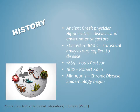In 1865, French chemist and microbiologist Louis Pasteur showed that a specific organism was causing an epidemic in silkworms. Then in 1882, Robert Koch, a German bacteriologist, established the bacterial cause of tuberculosis in humans. By the mid-1900s, chronic disease epidemiology began focusing on the rise of septic ulcer disease, coronary heart disease, and lung cancer.